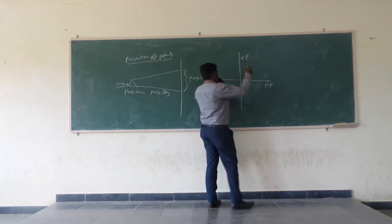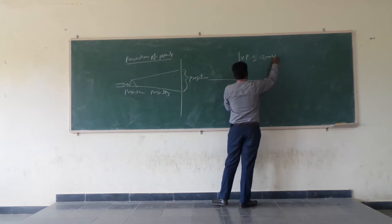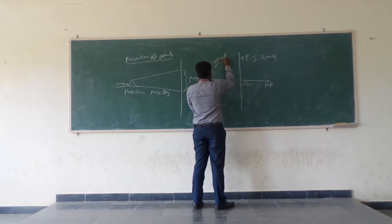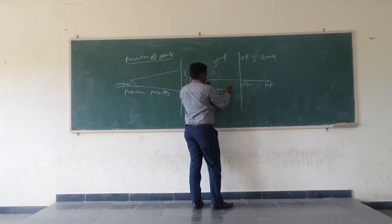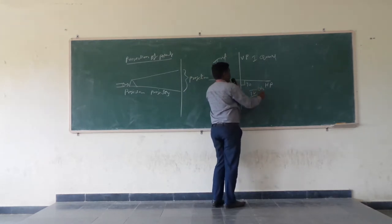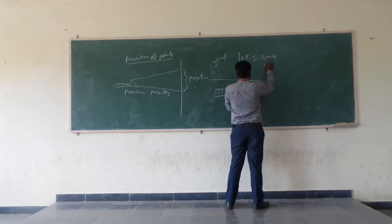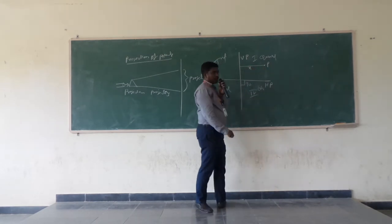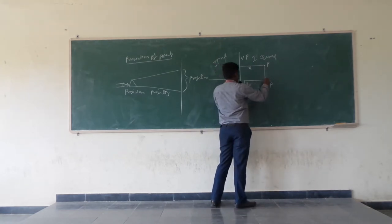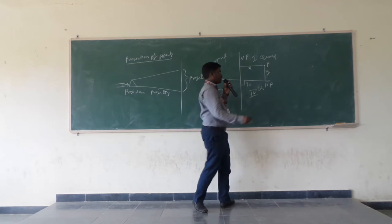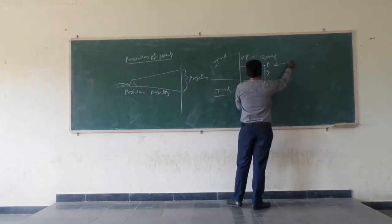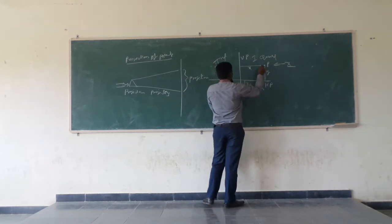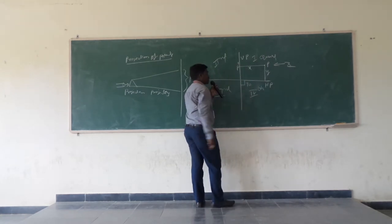Suppose you consider the first quadrant. We have two principal planes divided into the first quadrant, as well as the second quadrant, third quadrant, and fourth quadrant. If you consider the first quadrant, suppose a point P is located in the first quadrant at a distance of X from the vertical plane and Y from the horizontal plane. If you want to look at the horizontal plane, we need to see the direction of Z — that is called the observer direction. The object P will be projected on the vertical plane, and it will be marked as P dash.